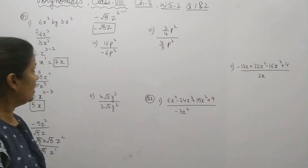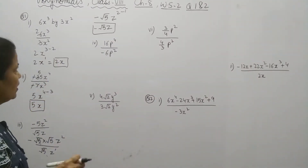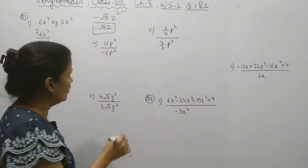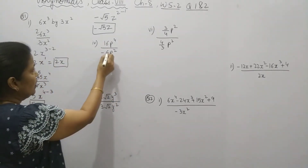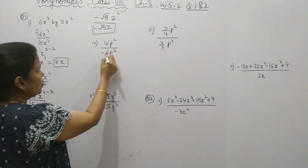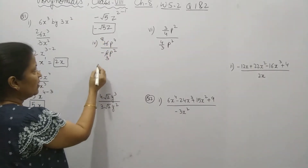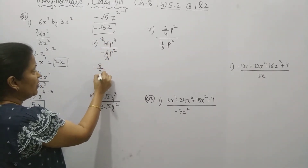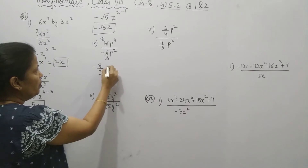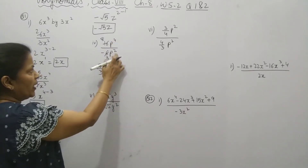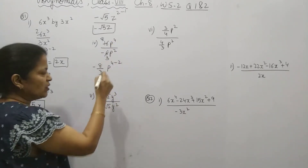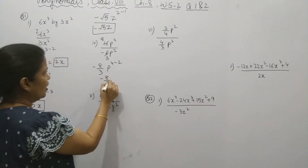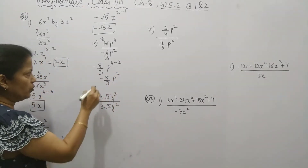Okay, fourth part. Can we cancel these digits here? Yes — it goes with 2. So you can keep the minus on the upper side: 8 by 3. P power 4 minus 2. Same concept. So it comes as minus 8/3 · P².